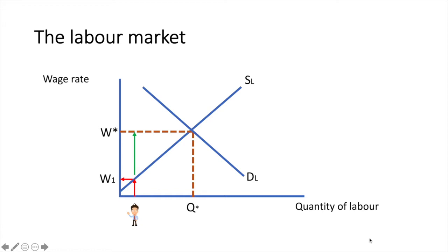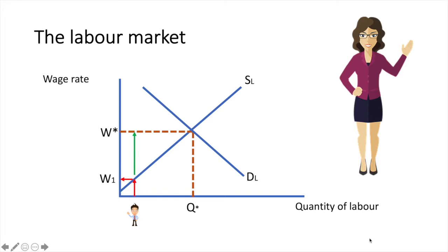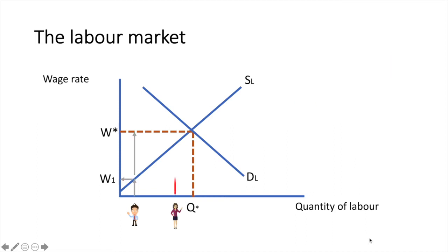Let me illustrate this point a little further. Here's another hypothetical worker Martha. Martha is willing to offer her labour at a wage rate of W2. However, she is paid above that wage at W star. The excess for Martha is less than the excess for Mike, so her transfer earnings are higher but her economic rent is lower.